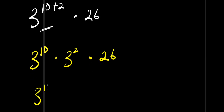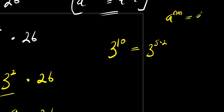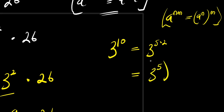So from here we have 3 power 10 times 3 power 2, that is 9, times 26. So what is the value of 3 power 10? We have 3 to the power of 10 — we can express it as 3 to the power of 5 times 2. And remember a power n times n equals a power n raised to the power of n. So this equals 3 to the power of 5 raised to the power of 2. Now from here we find the value of 3 power 5. So 3 power 5 is 3 times 3 times 3 times 3 times 3 — that is 243.